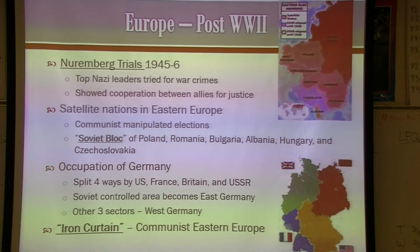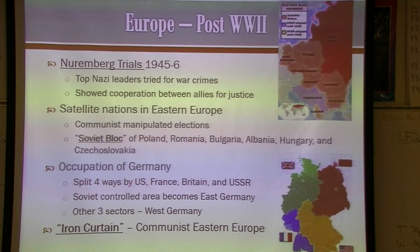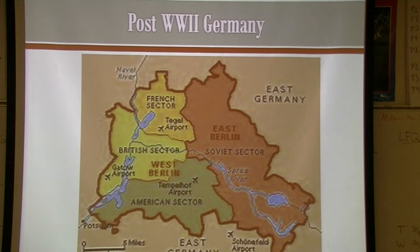For most anybody born before 1980, this is something they were used to — they knew of two Germanys. The Berlin Wall, symbolic of the division, stood until Germany reunited in 1989. When you watched the Olympics, there was an East Germany and a West Germany. We're going to come back to various things about the Berlin Wall in a little bit.